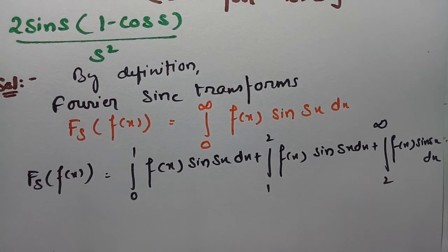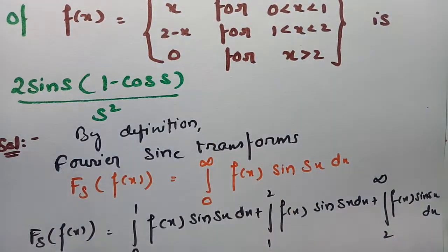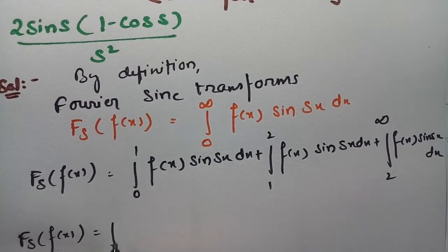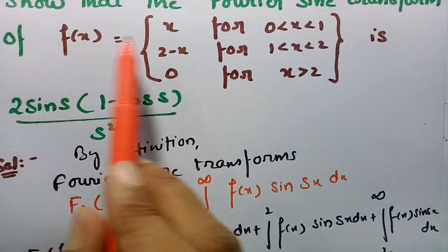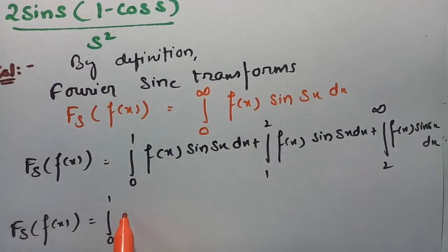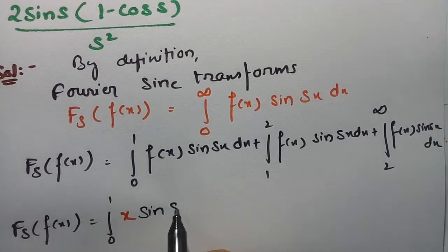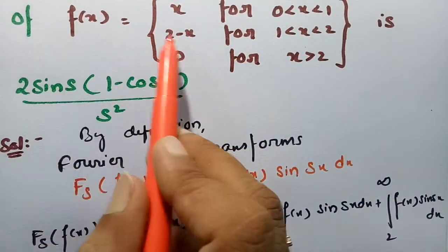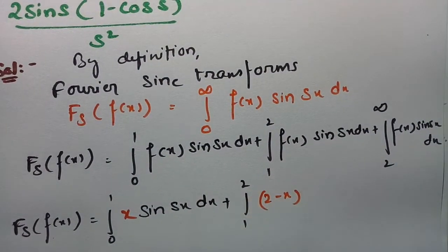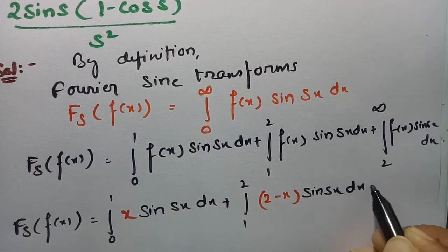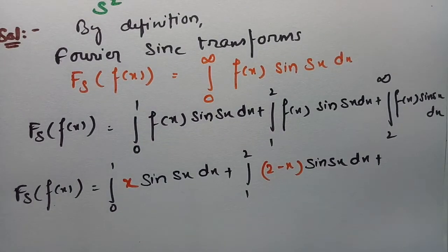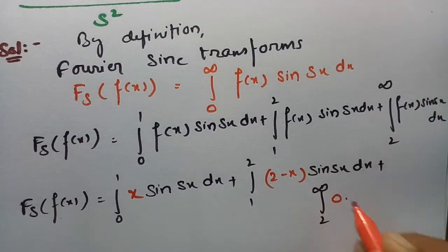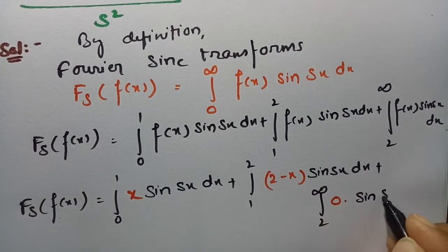Between 0 to 1, f(x) equals x; between 1 to 2, f(x) equals 2 minus x; and for x greater than 2, f(x) equals 0. Substituting these values, the Fourier sine transform becomes the integral from 0 to 1 of x sin(sx) dx, plus the integral from 1 to 2 of (2 minus x) sin(sx) dx, plus the integral from 2 to infinity of 0 times sin(sx) dx.